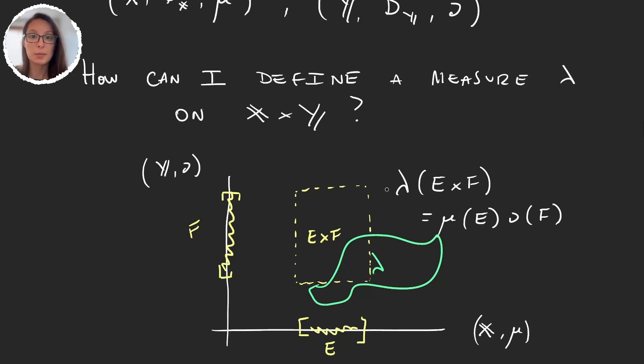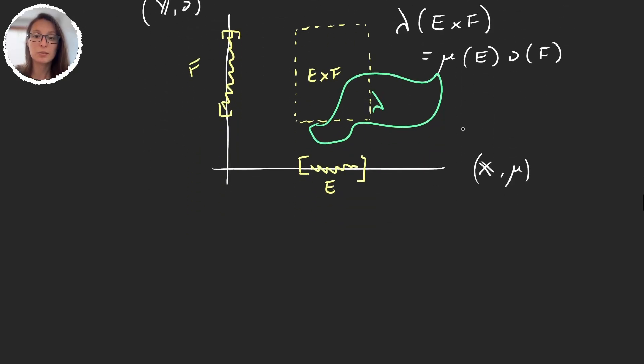So the idea for the next couple videos will be to define this measure lambda. And this is how we are going to do it. We will start by defining an algebra on the product space. Let's call this algebra B_X times B_Y. And this times I'm going to put it with a square. So this is going to be an algebra.